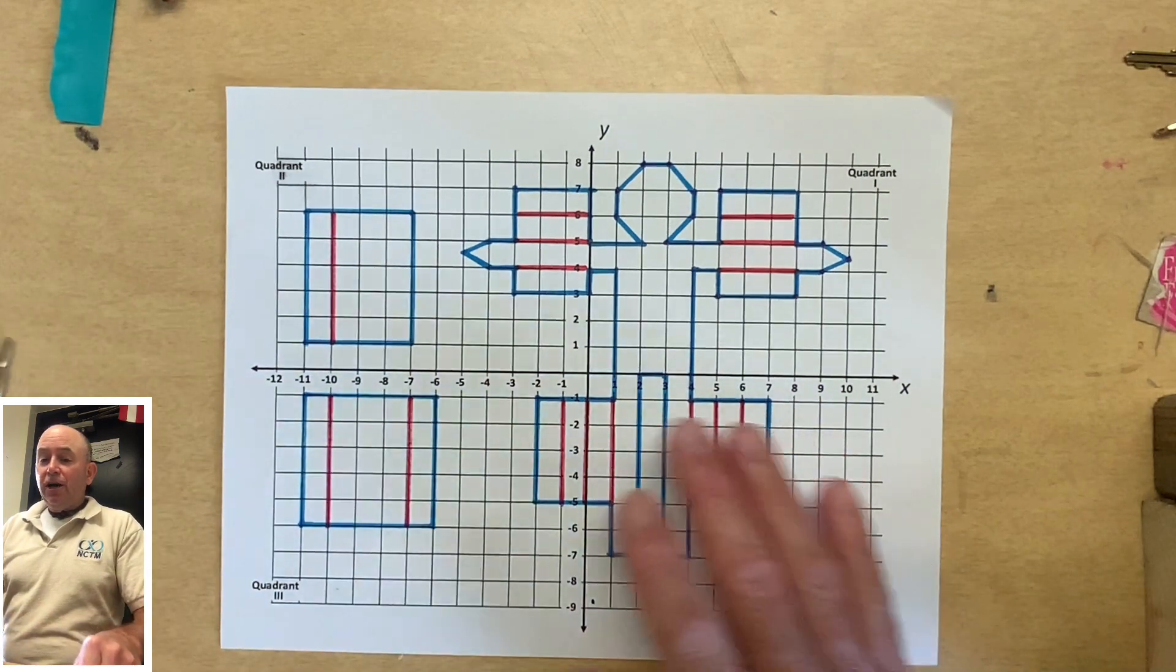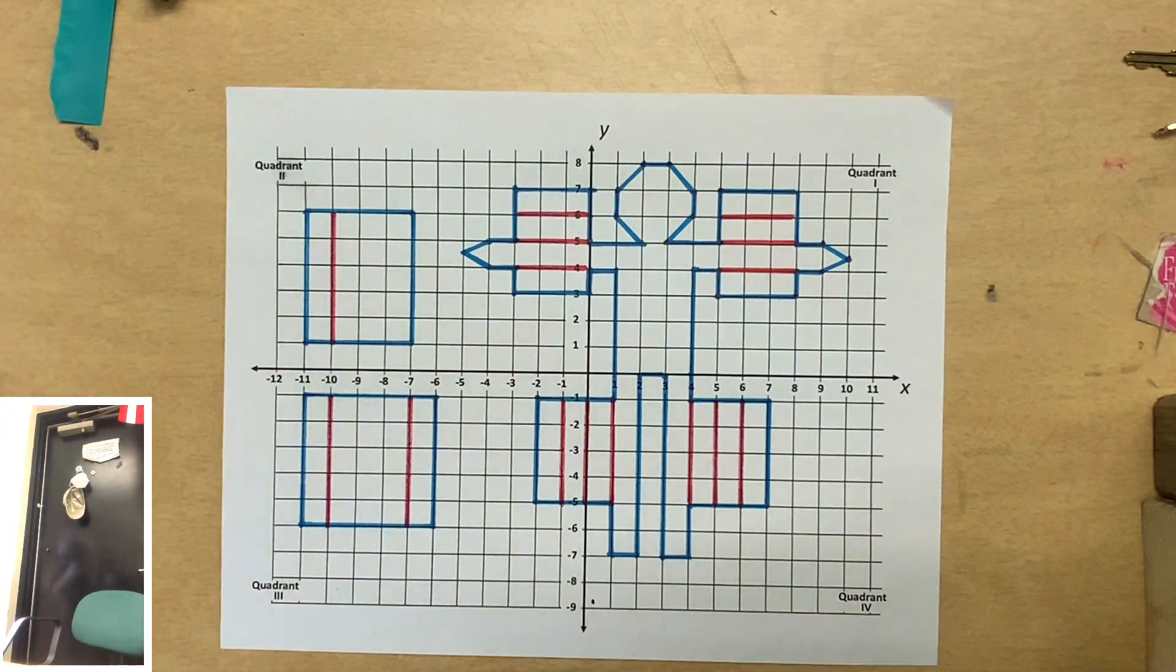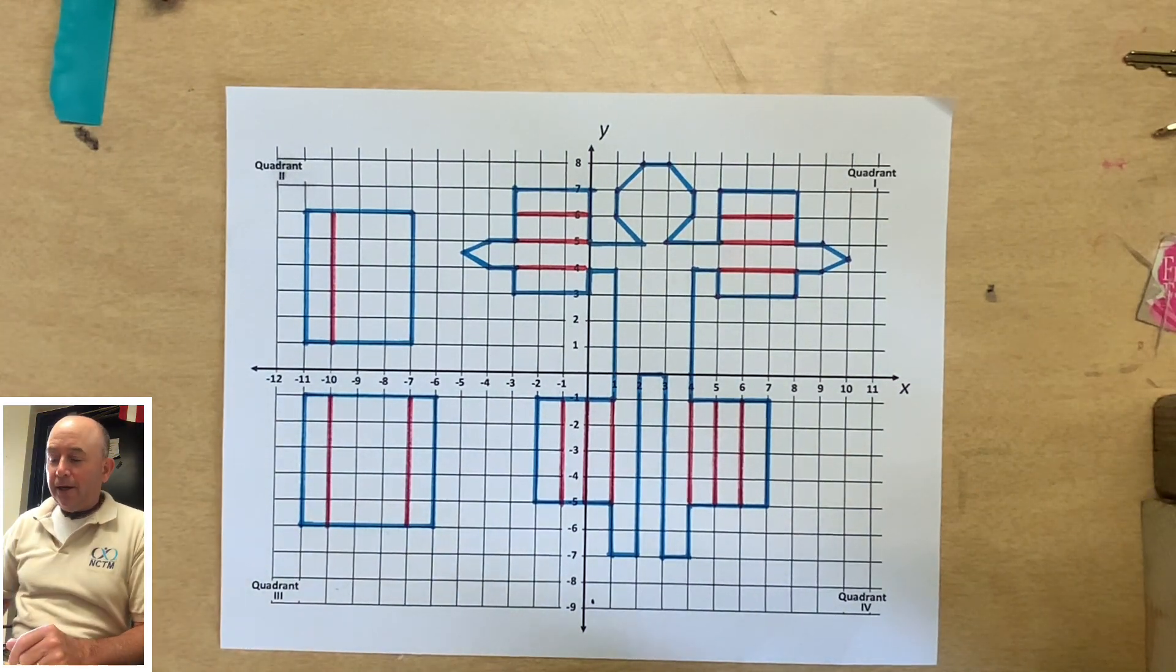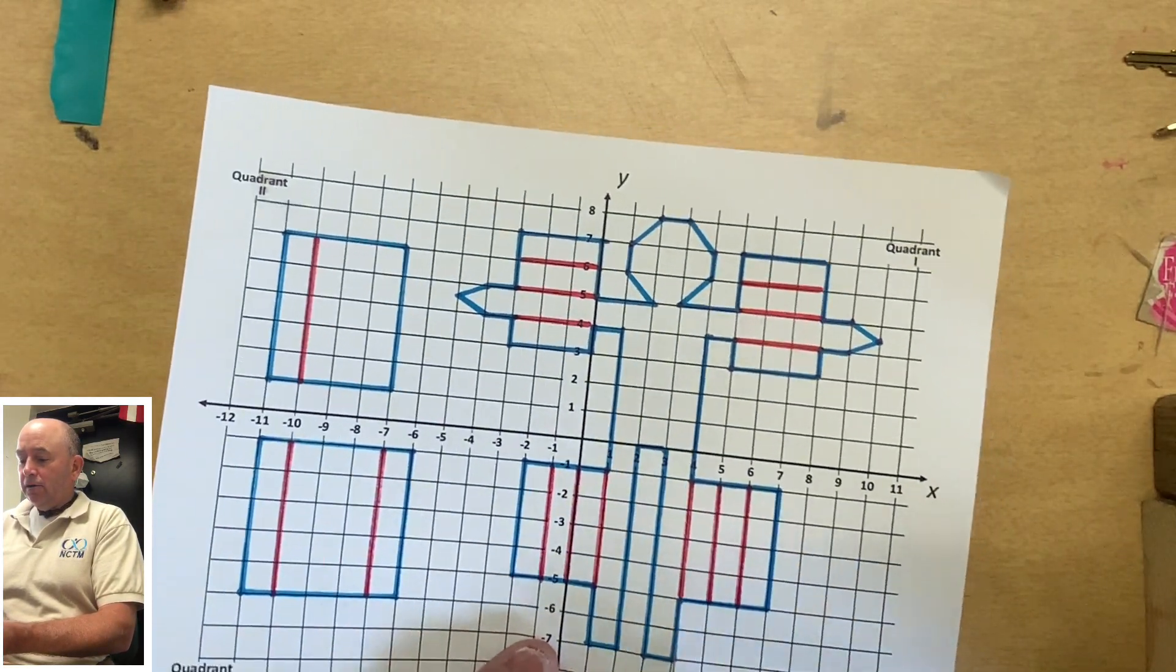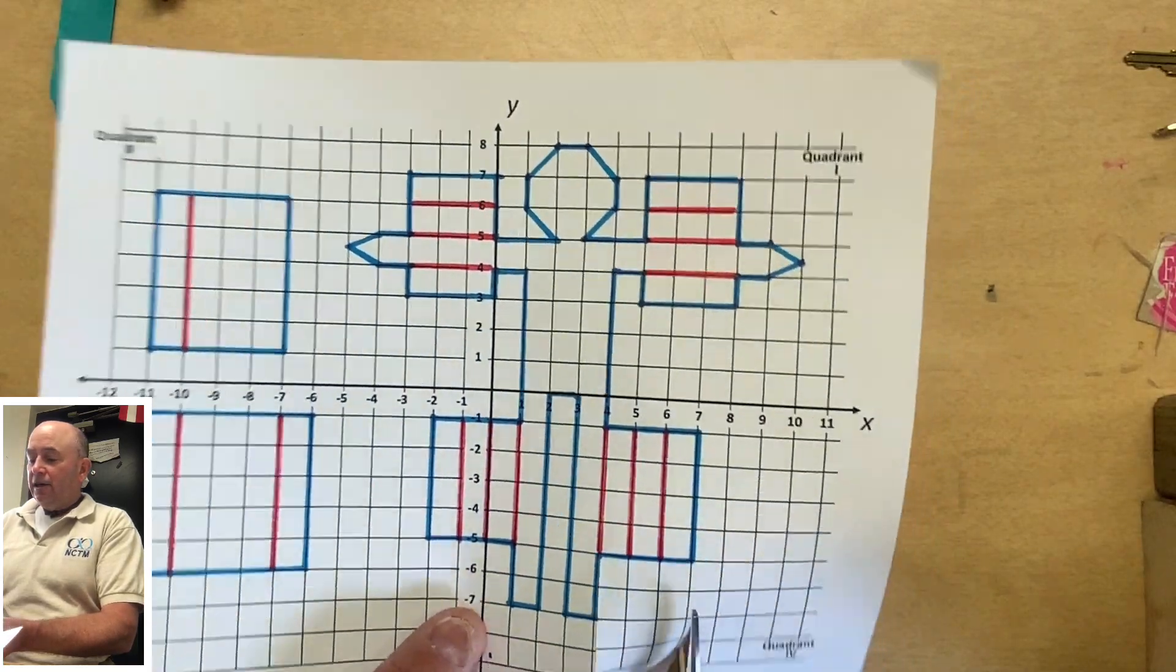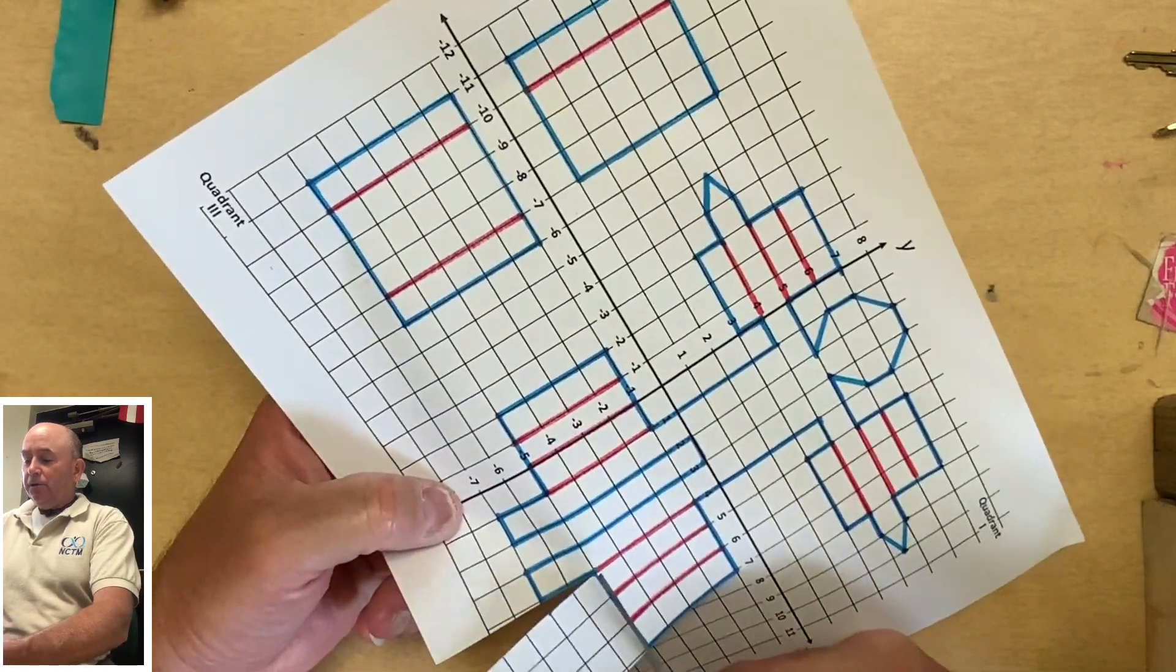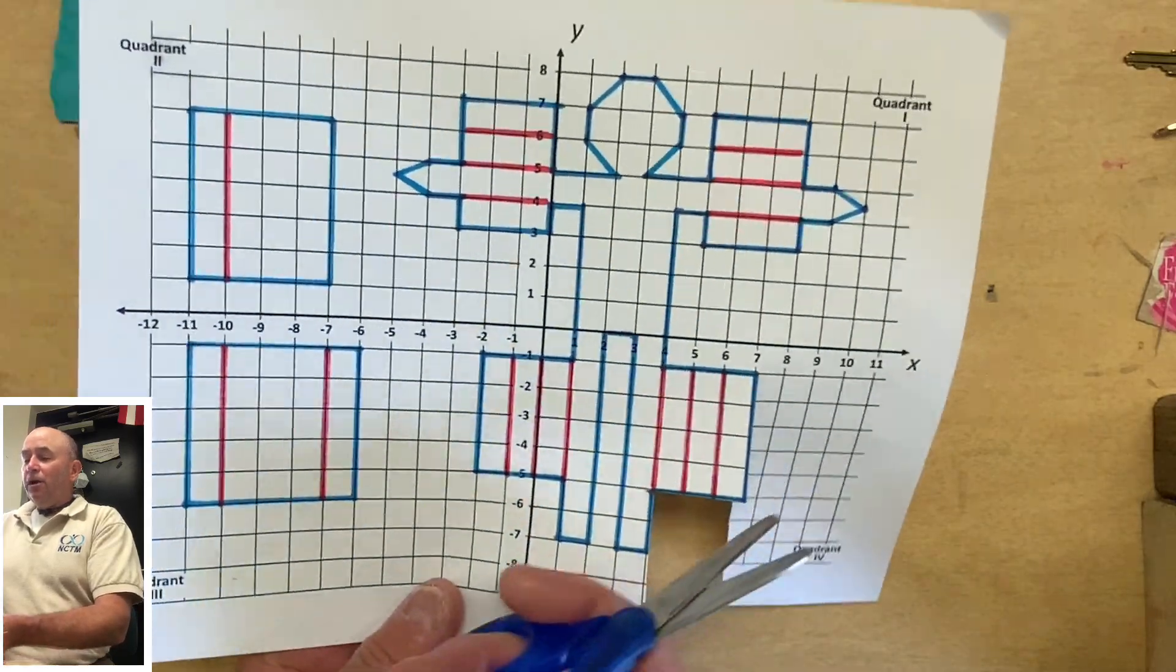When you cut out Sailor Sam, let me show you a little something. I'm going to grab some scissors. When you cut out Sailor Sam, you're going to cut right along those blue lines. Now, notice how I don't try to turn a corner. I'm just going to come back in like this and cut down that blue line. Then I'm going to turn it and cut it like that. That way I don't have to turn any corners.